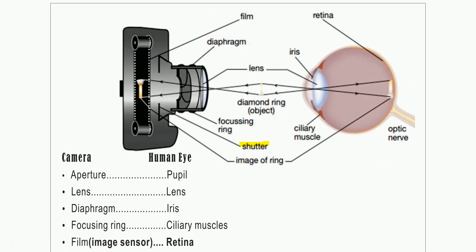First, there is the aperture. Aperture means the opening — the opening of the camera is called the aperture. Through this aperture, light enters the camera. In the same way, the human eye also has an aperture. The aperture of the human eye is the pupil. Just like the camera aperture controls how much light enters, the pupil does the same in the eye.